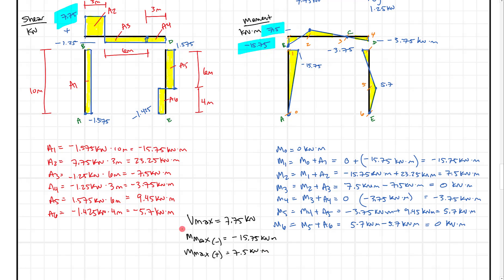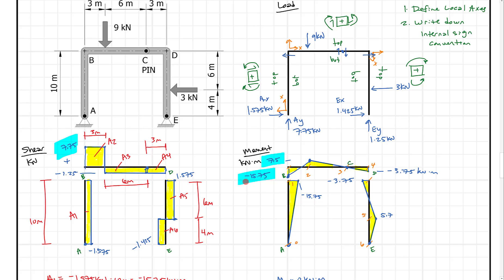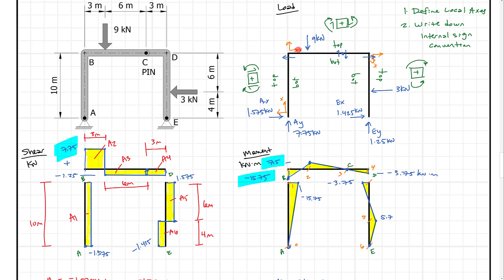So there we have it. We solved for all our maximum shear and maximum moment. To summarize what we did: after finding the reactions in the previous video, we defined our local coordinate systems, wrote down our internal sign convention, and then constructed our shear and moment diagrams. I hope this example helps. If you have any comments, feel free to drop them below. Keep working hard, moving onward and upward.